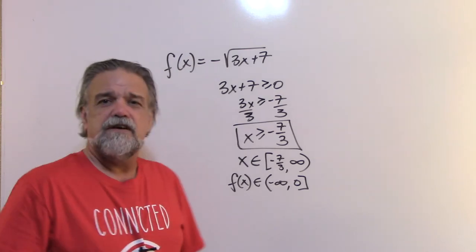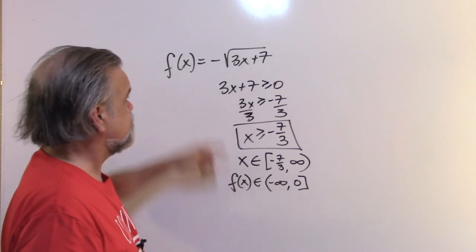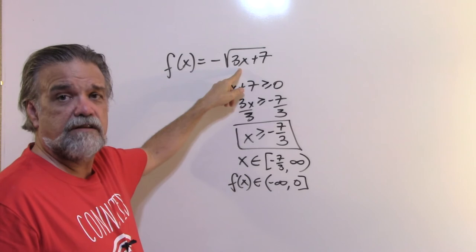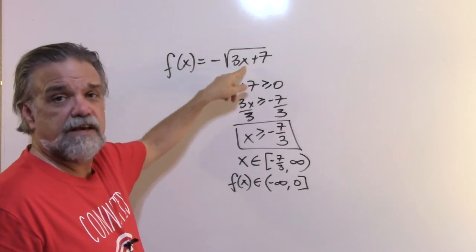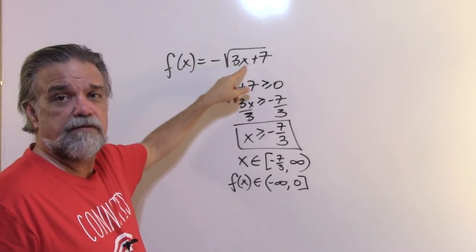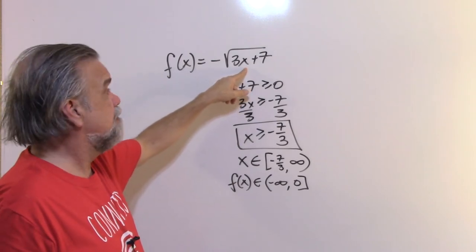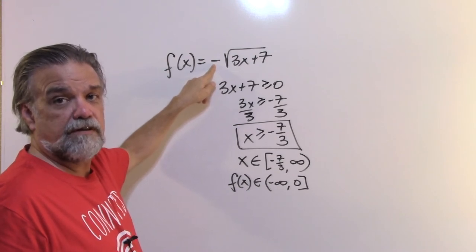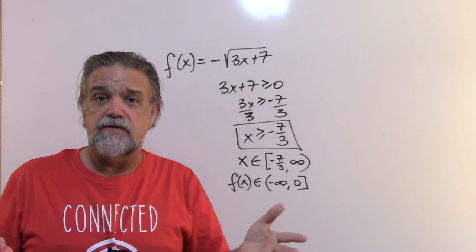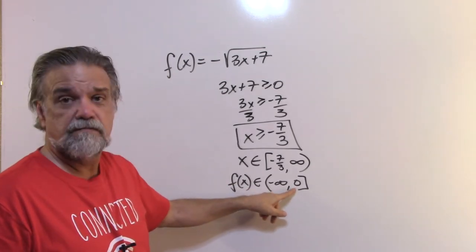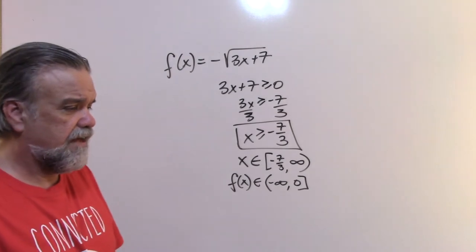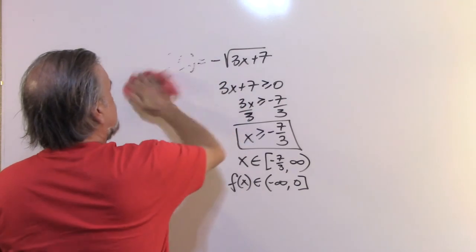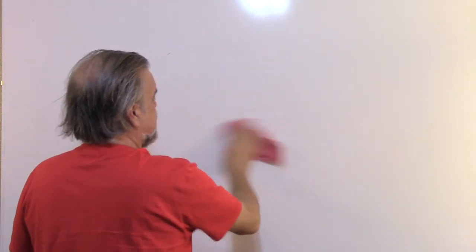A cleaner way to see this: when you take the square root of a number, the answer is always non-negative. If the radicand is zero, the answer is zero; if positive, the answer is positive. Put a negative in front, and the result is either zero or negative. So all values are from negative infinity to zero — the range is (-∞, 0].